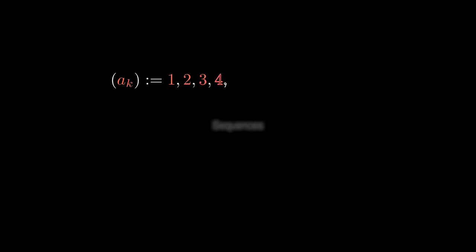The very first sequence we've ever encountered is the most straightforward one. Start from the number 1 and add 1 to get the next number 2, then 3, then 4, and so on and so forth. This is a sequence of numbers — essentially a list of numbers that keeps on going.